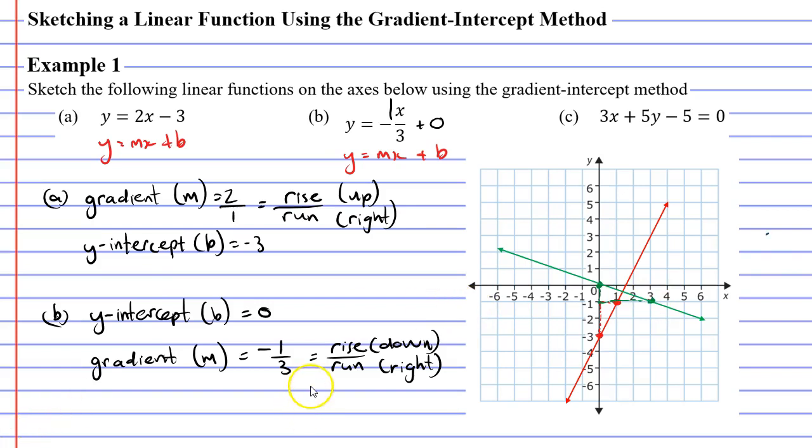Now some of you might be wondering what would have happened if we put the negative in front of the 3 instead of the 1. Well, I'd like to encourage you to complete question b and put the negative in front of the 3. Once you've done that, I would like you to compare your graph to mine. Anyway, we need to move on to question c now.